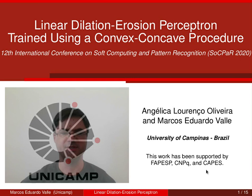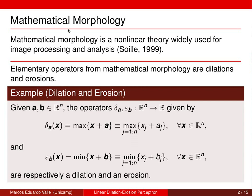Let me begin by presenting the basic concepts of mathematical morphology. Mathematical morphology is a non-linear theory widely used for image processing and analysis. The elementary operators from mathematical morphology are dilations and erosions. A dilation is an operator that commutes with the supremum operator, while an erosion is an operator that commutes with the infimum operator.